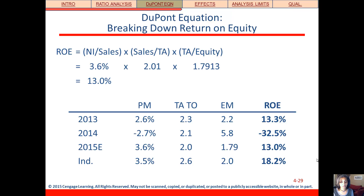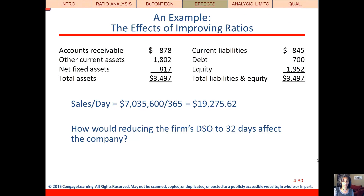From 2014 to 2015, ROE went back up, and so did profit margin, and the equity multiplier went back down. So we can see exactly what's driving the change in ROE.